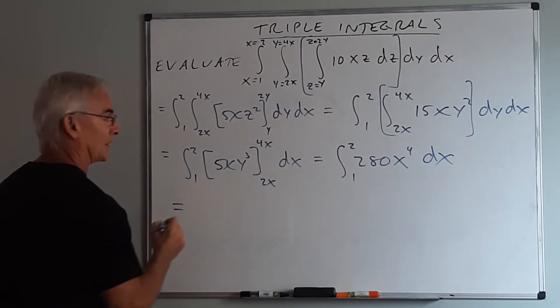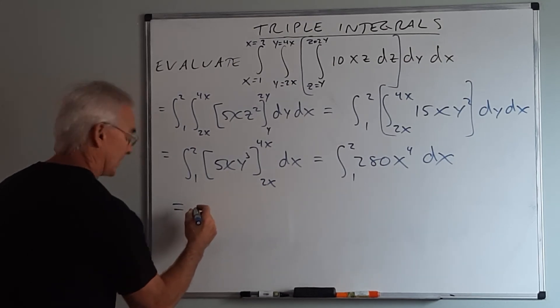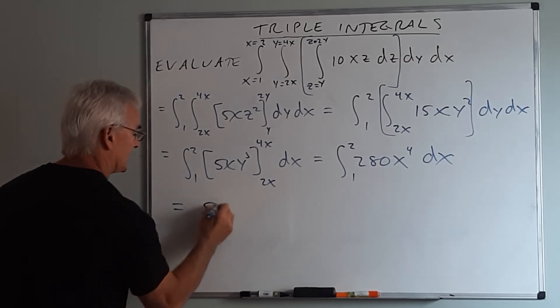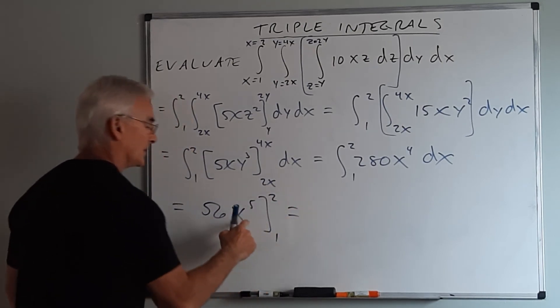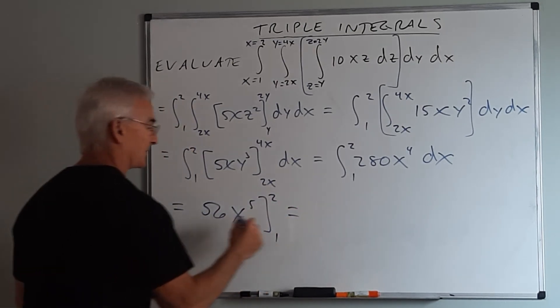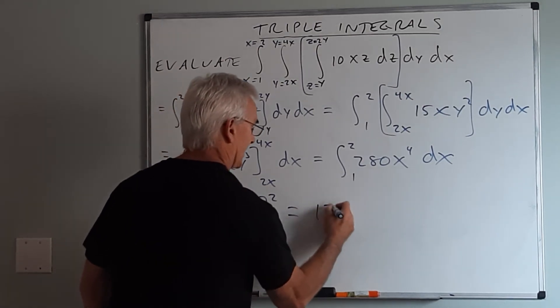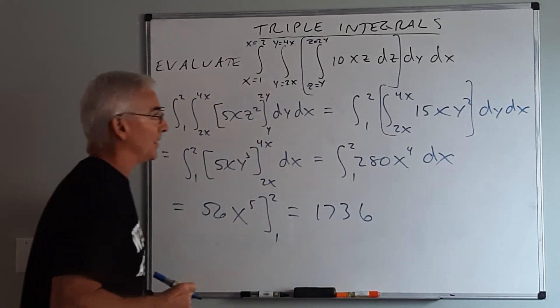And now finally I have a very friendly single integral. So when I do this, I'll get 56x to the fifth evaluated from 1 to 2. So 2 to the fifth minus 1 to the fifth all times 56 gives us 1736 as a final answer.